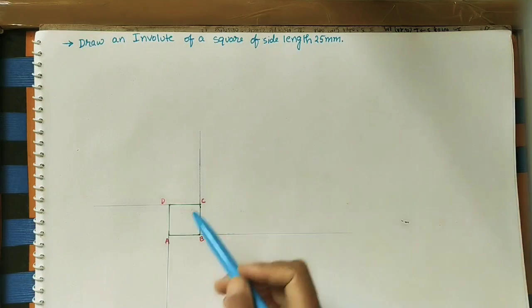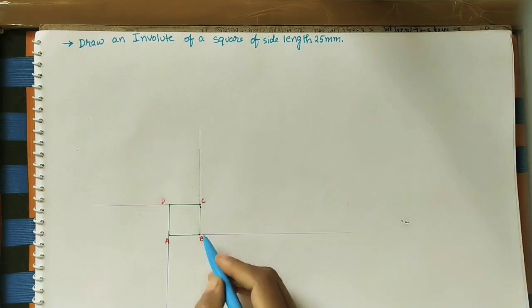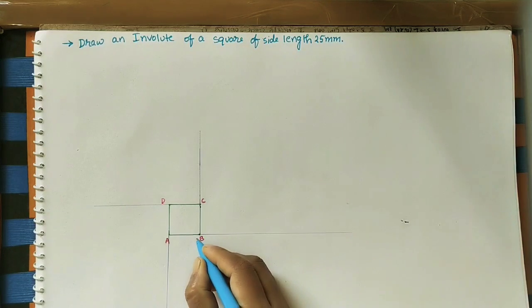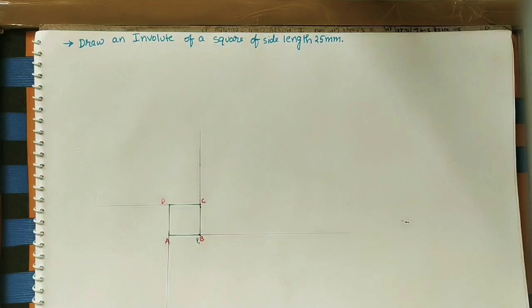After doing all the lines, take point B as point P, the initial point. From point P, we need to find the peripheral length of the square.